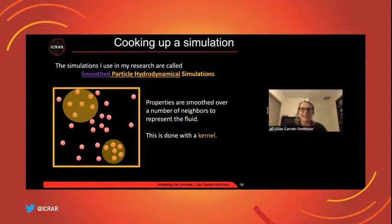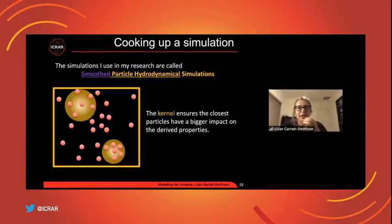So back to the smooth particle hydrodynamical simulations. Now, the other key is in the name and it's the smoothed property. So properties in SPH simulations are smoothed over the number of neighbors to represent the fluid. And this is done with a 3D sphere called a kernel. And this kernel ensures that the particles closest to a gas particle have a bigger impact on its derived properties. I won't go into that in too much detail, but basically it just means things are smooth. And it links the fact this is supposed to be representing a fluid, not just individual particles.